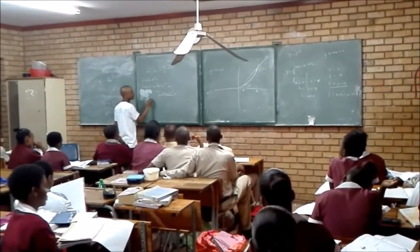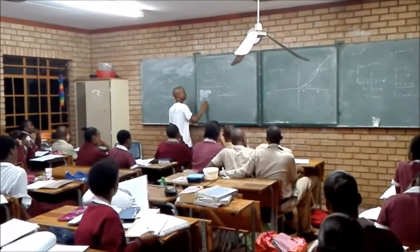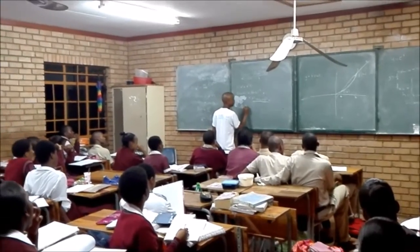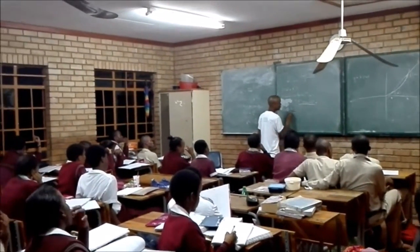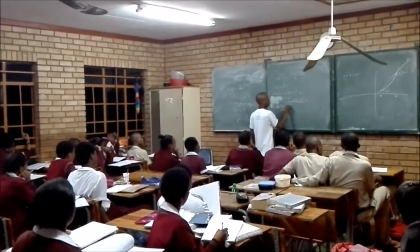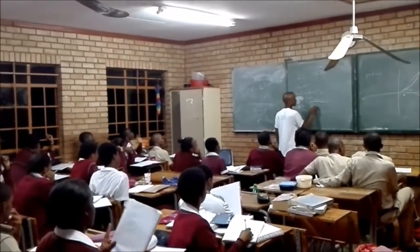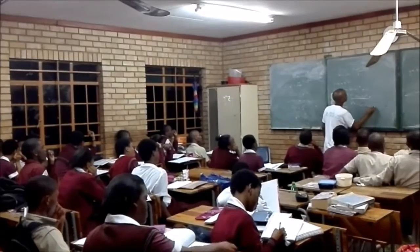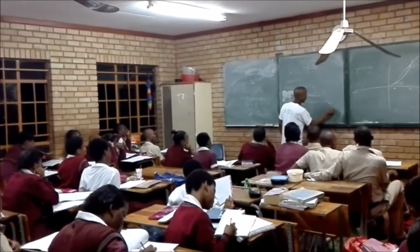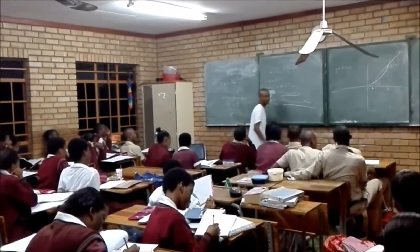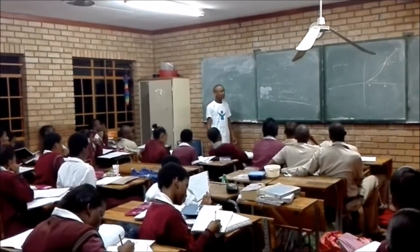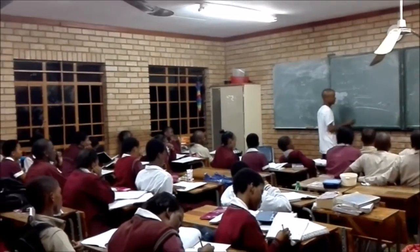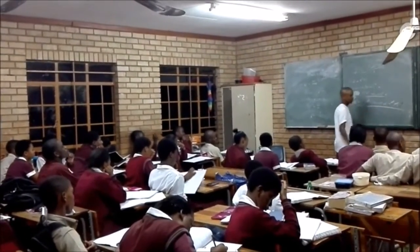So, f prime of x is equal to the limit as h tends to zero of x squared plus 2hx plus h squared plus 1, minus x squared minus 1, all over h. Right? Your x squared will cancel your x squared, right? Your 1 will cancel.